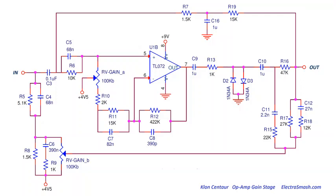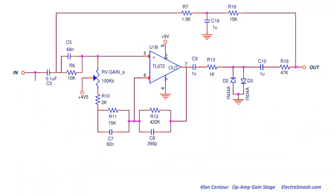Therefore, I made the decision that minimum gain in my pedal would equal the tonal response of a clon at 9 or 10 o'clock. That's where it becomes useful, optimizing guitar tonality to cut through a band mix. Boom! A big chunk of parts quickly eliminated.